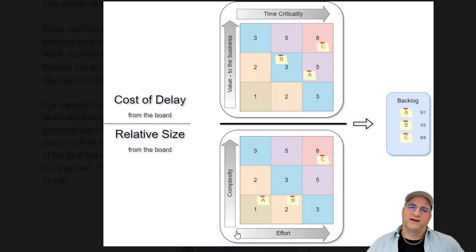But the point is to deliver the highest amount of business functionality that you can, and by business it means whatever business you're in, as early as possible. So in this case, what we're going to do is we actually have two boards here. One is the cost of delay board. One is the relative size board. I'm going to go into a little more detail on that.